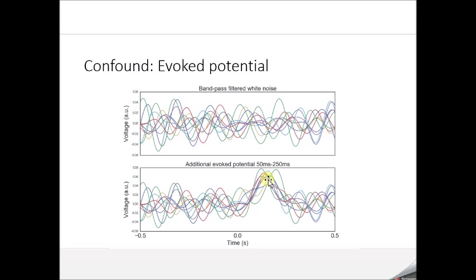One confound for PLV is that we can get a significant phase locking value after an event without observing a true phase reset. In the top plot, each trace was generated by bandpassing white noise in the alpha range between 8 and 12 Hz, so the phase on every trial is completely independent. In the bottom plot, the same random alpha oscillations were used, but a Gaussian evoked response was added in response to the event — there is no phase reset in the alpha oscillation, just a non-oscillatory evoked component.